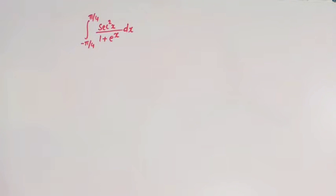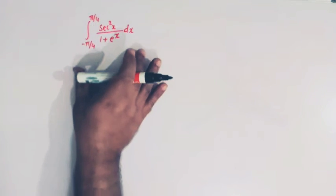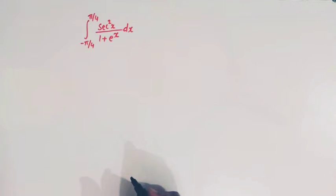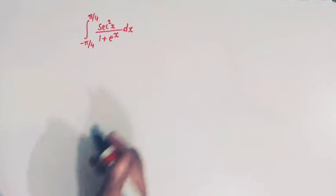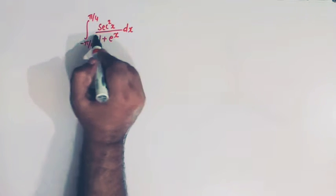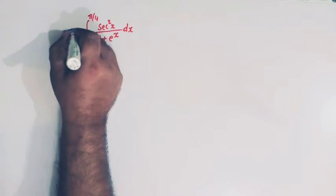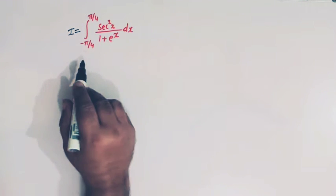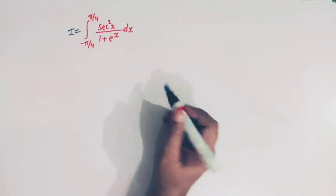Hello viewers. In today's class we are going to solve one important problem from definite integrals. We have to evaluate this integral, but in order to do so we will make use of one important property of definite integrals. So here we have the integral from minus pi by 4 to pi by 4 of sec squared x over 1 plus e raised to x dx. Let us call this integral as I.